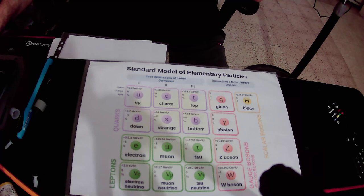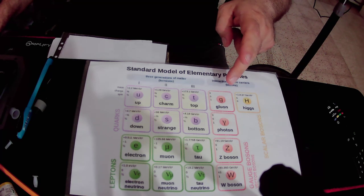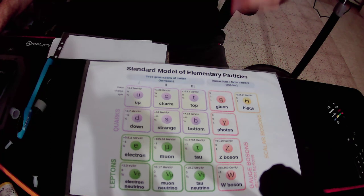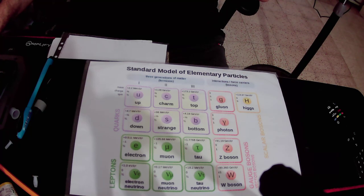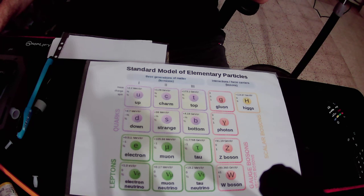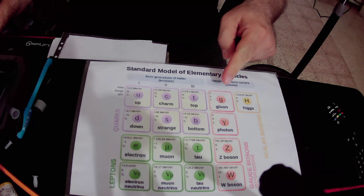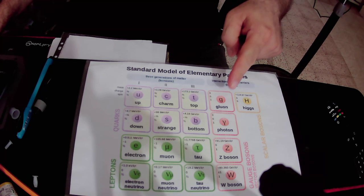In addition, we have 4 force elementary particles shown in red. Those particles carry the 4 fundamental forces in nature. The gluons carry the strong nuclear force that binds the protons together in the nucleus of the atom, and we have 8 types of gluons.